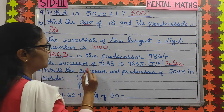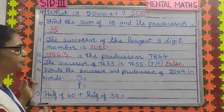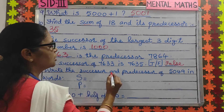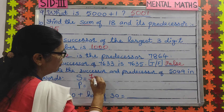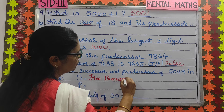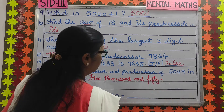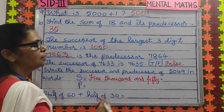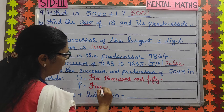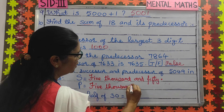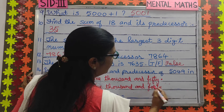Number 14: write the successor and the predecessor of 5,049 in words. You have to write the spellings. The successor of 5,049 is 5,050 — write that in words. And the predecessor of 5,049 is 5,049 minus 1, which is 5,048.